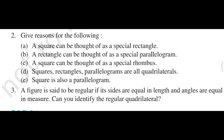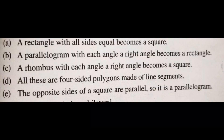Part B: a rectangle can be thought of as a special parallelogram. Why? The reason is: a parallelogram with each angle as a right angle becomes a rectangle. If all angles of a parallelogram are 90 degrees — or even one angle is 90 degrees — the remaining angles also become 90 degrees by its properties.